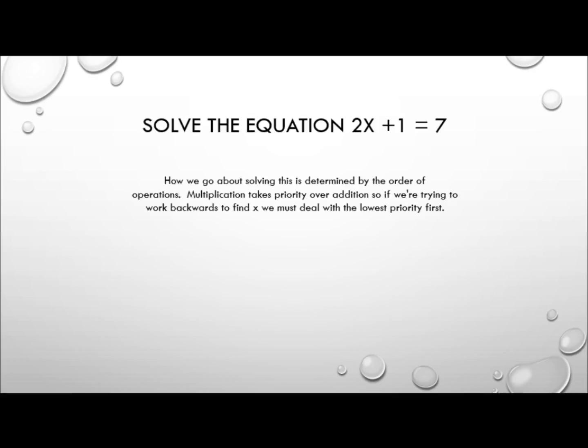Just as our order of operations logically grows out of the definition of those operations, so the laws of algebra grow out of the order of operations. Let's have a go at solving an equation: 2x plus 1 equals 7. If we just ignored our order of operations and divided by 2 first, we'd get x plus 1 equals 3.5, then x equals 2.5. But another person might subtract the 1 first and then divide by 2, getting a totally different answer. This is why we need the order of operations — it's very important to do things in the right order.